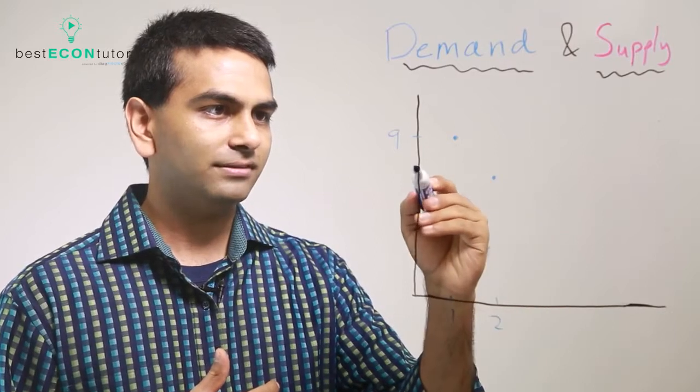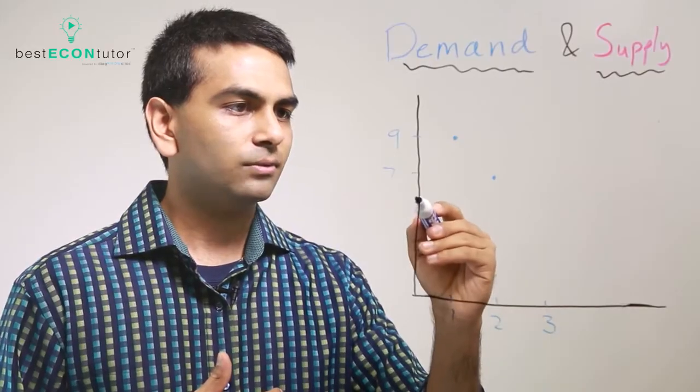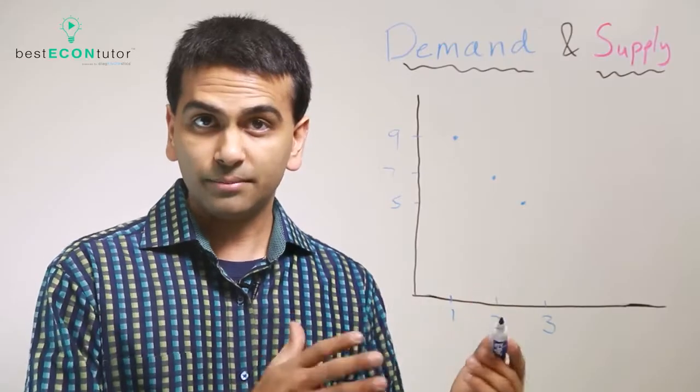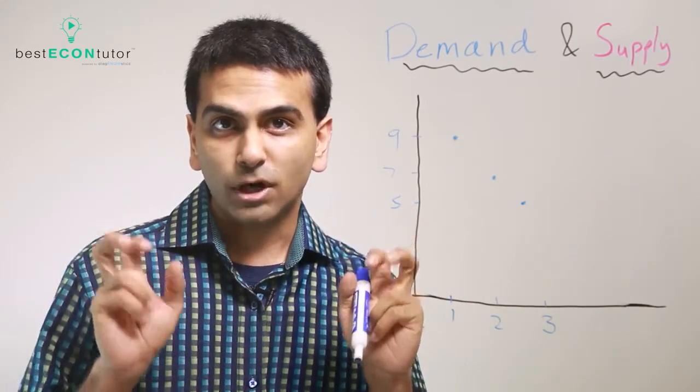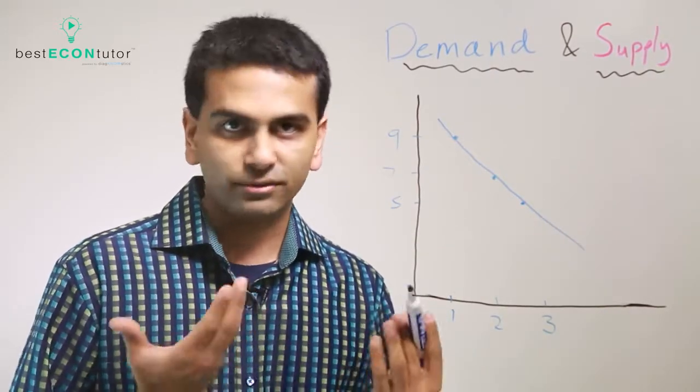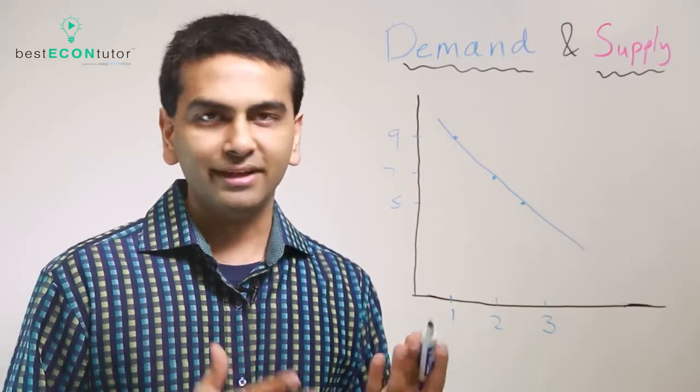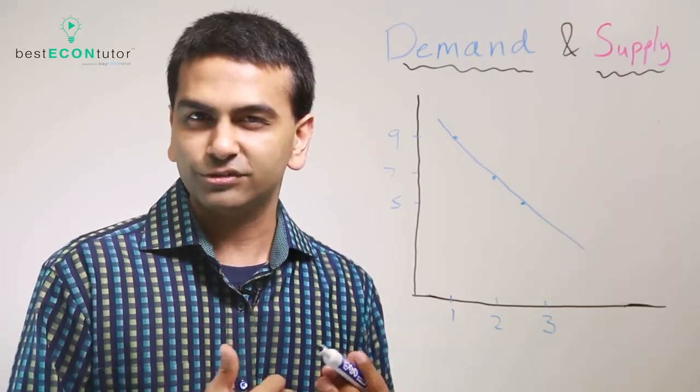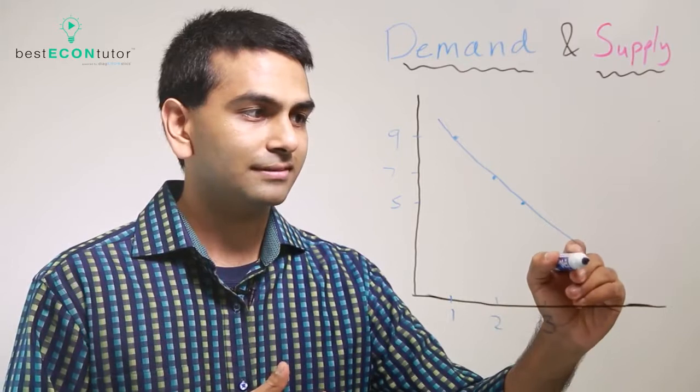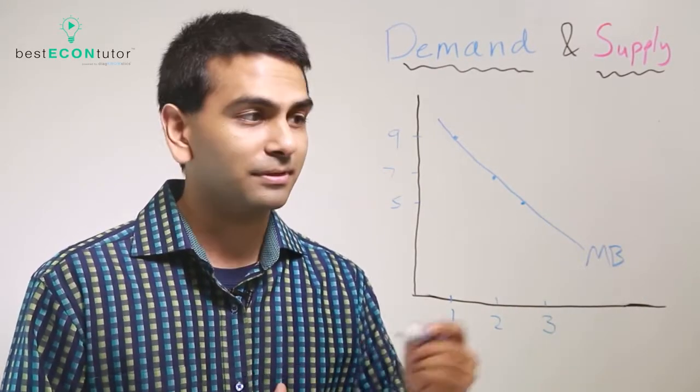These numbers are marginal benefit—marginal just means next, so the benefit you get from the next slice. Notice the third slice doesn't taste as good as the first, and that's why our marginal benefit keeps going down. Our marginal benefit curve has a downward slope. Now this marginal benefit curve has another name, more popularly known as demand.